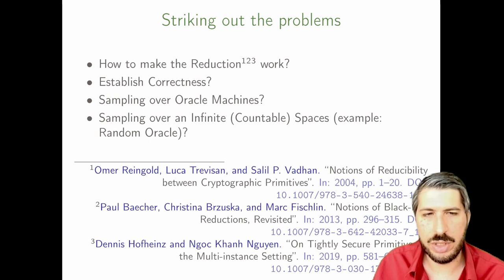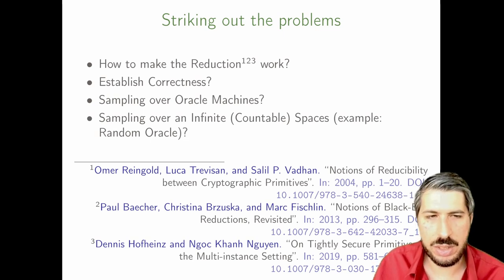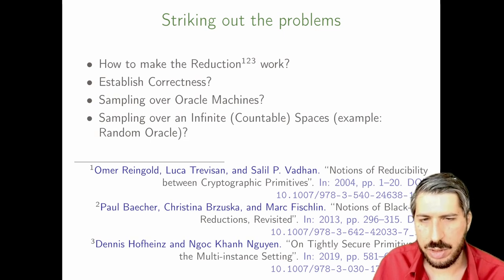Recall there is considerable work, as you can see on the slide, some of it on black box reduction hierarchies. Rheingold, Trevisan, and Vadhan described the first fundamental abstract framework. Later, Bacher, Brusca, and Fischlin created a much finer hierarchy that we will review later. Hofheinz and Iowen introduced a concrete framework to reason about reductions upon which we built.